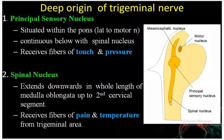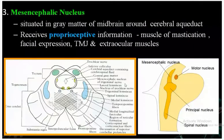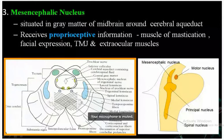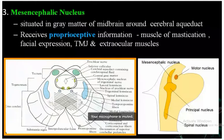The mesencephalic nucleus is present within the midbrain around the cerebral aqueduct. It receives proprioceptive sensation - specifically muscle and joint sensation - from the muscles of mastication, muscles of facial expression, TMJ, and extraocular muscles.